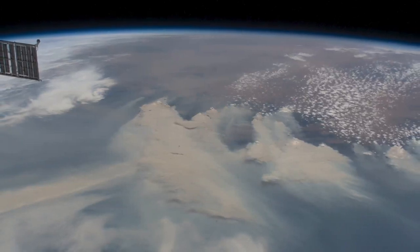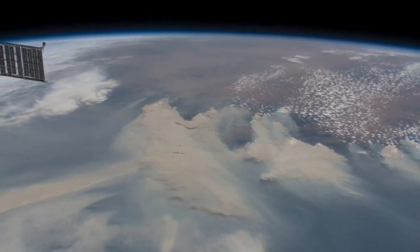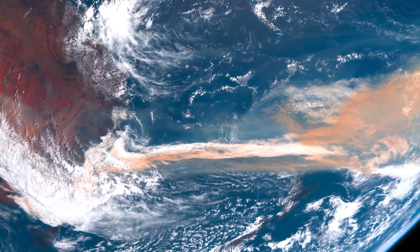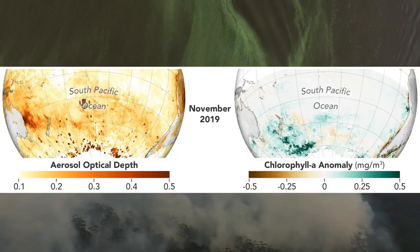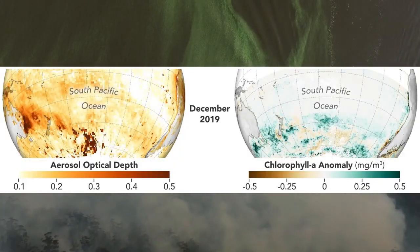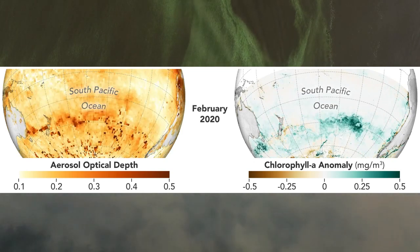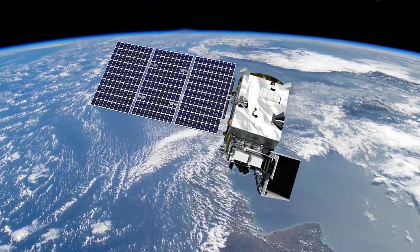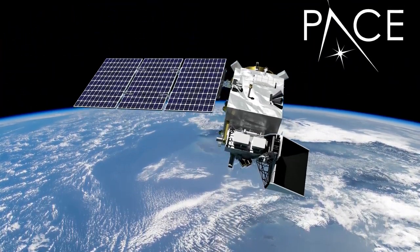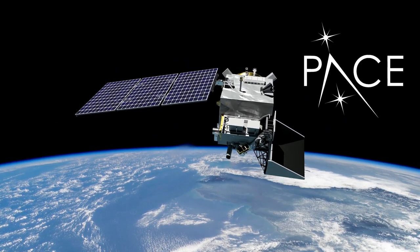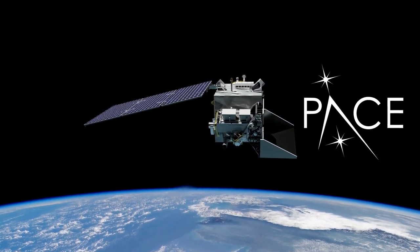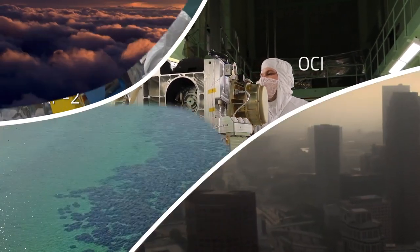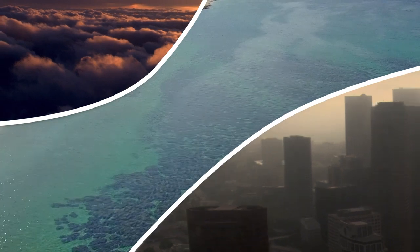And here is why having a vantage point from space is crucial. From satellites, we can observe how the movement of carbon changes when large-scale events like wildfires occur. The connection between the Australian wildfires and Southern Ocean bloom could not have been made without satellites. NASA's Plankton, Aerosol, Cloud, and Ocean Ecosystem mission is specifically designed to better measure parts of the atmosphere and ocean connection with unprecedented resolution.